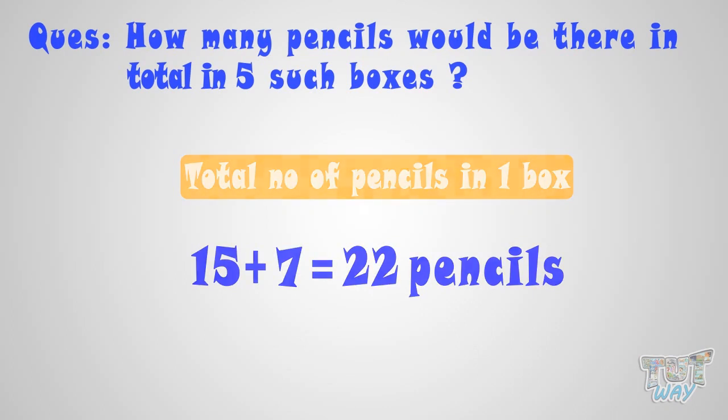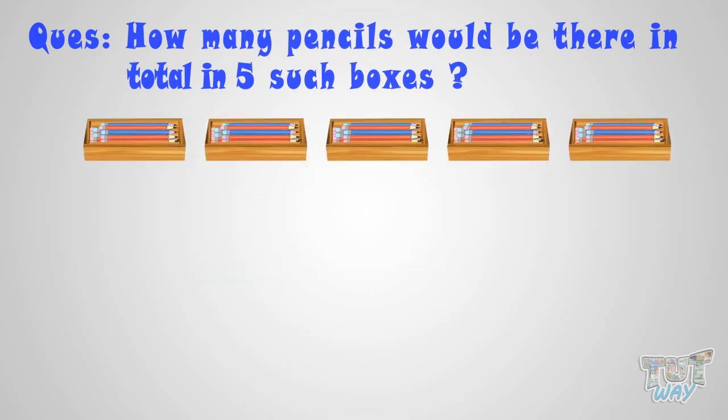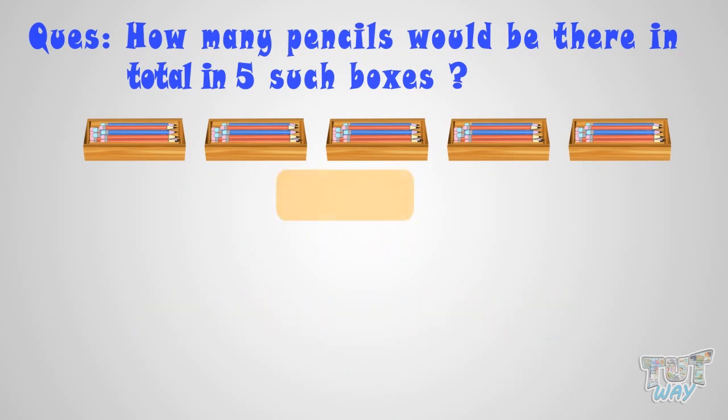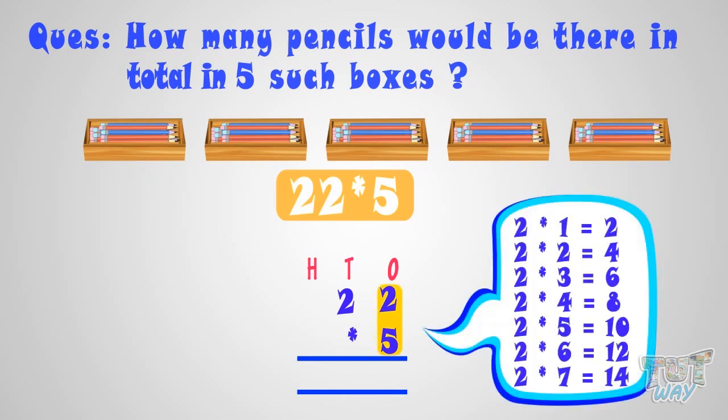Now, we have to find how many pencils would be there in 5 such boxes. That is, we need to add 22 5 times. Or, we will multiply 22 with 5 for that. Writing it like this. First of all, multiply 5 with 2. 5 multiplied with 2, we get 10. Write the ones place digit at ones place in the product. And carry over the tens place digit, that is 1, to the next place, that is tens place.